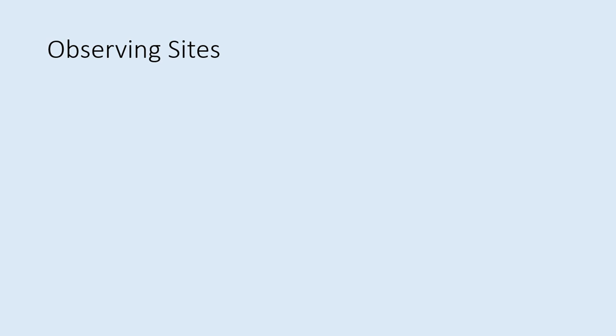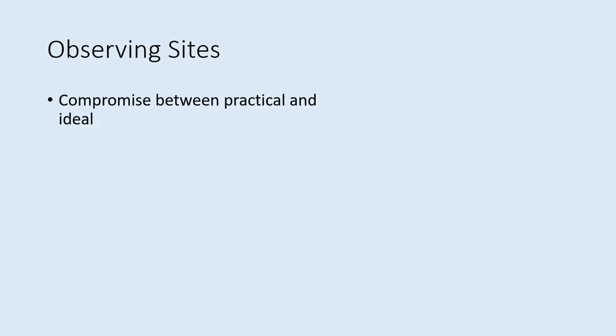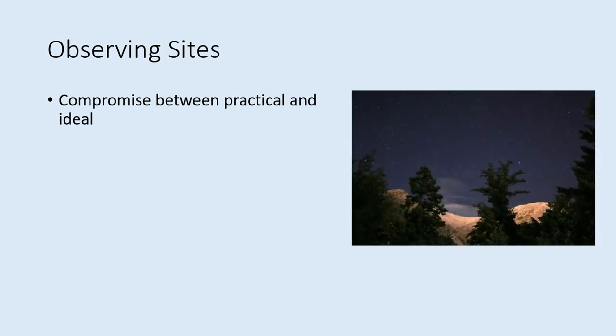Picking an observing site generally involves some amount of compromise between what is practical and what is ideal. While darker sites let you see more stars, they're often hard to get to if you live in or near a city. Also, if you're not used to finding your way around the sky, a very dark sky can have so many stars that it's hard to identify what you're looking at. First, you should feel safe where you observe. If you're going out at night, it helps if you can go with other people, and don't go into places where you feel threatened.